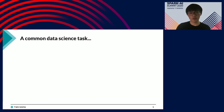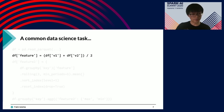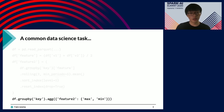I want to motivate my talk by looking at a pretty common data science task. Here is some Pandas code. The first thing we're doing is a simple column operation: taking two columns V1 and V2, averaging those, and assigning the result to a new column called 'feature'. The second thing is a window operation — grouping data by a column called 'key' and computing the rolling mean of 'feature', assigned back as 'feature2'. Finally, we do a group-by aggregation on 'feature2', grouping by 'key' and computing the max and the mean.